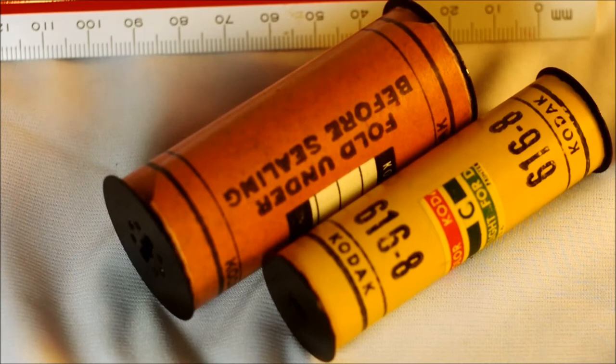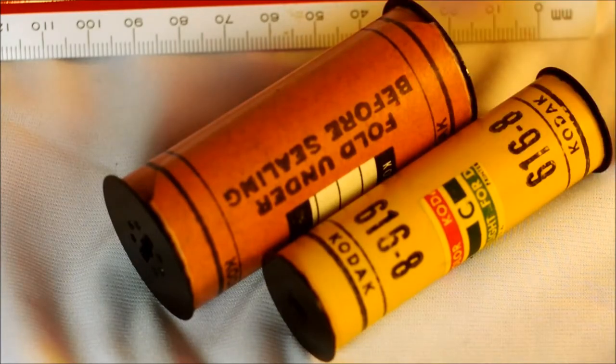And unfortunately, because this is larger than 120—whereas with 16 millimeter, 828, 127 even, you can take a 120 paper backing and cut it down to size—these ones you can't. You'd have to cut two and then tape them together and it'd be a big mess. At any rate, 116 and 616.